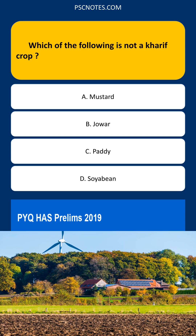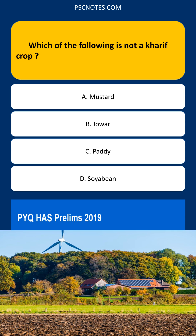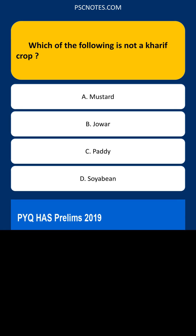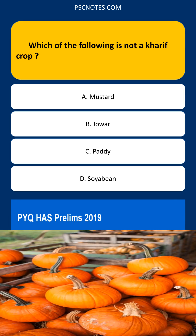Explanation: Mustard is not a kharif crop. It is a rabi crop. Kharif crops are sown with the onset of the monsoon, June to July, and harvested in autumn, September to October.